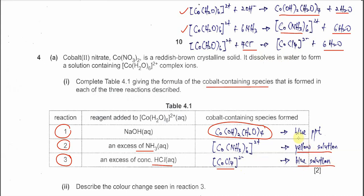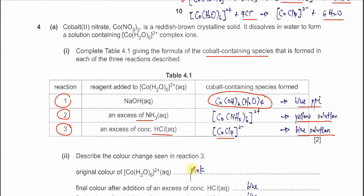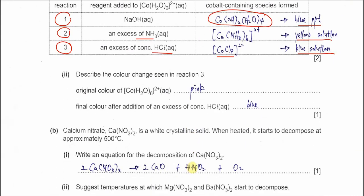All the colors you must know. For part two, describe the color change seen in reaction three: initially the hexa aqua cobalt(II) ion is pink, and after reaction with HCl it forms the blue solution.